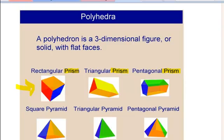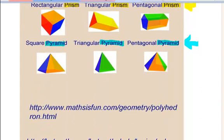One way you can think about prisms is as a three-dimensional shape that has two bases. We can compare that to pyramids, where pyramids only have one base. So I think of it as prisms having two bases and pyramids having one base. Since we only have one base with a pyramid, instead of having sides that are rectangles, the main polygon for a pyramid's sides is going to be a triangle — so all the sides of a pyramid are triangles, with the exception of its one base.